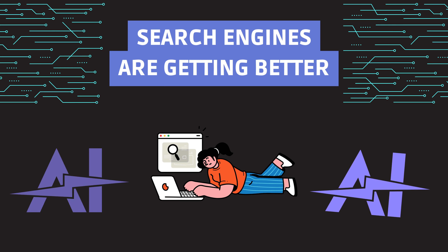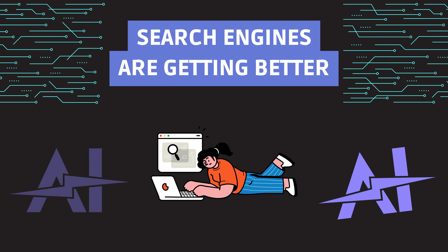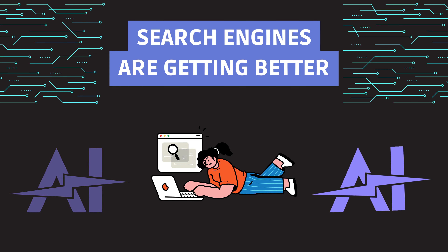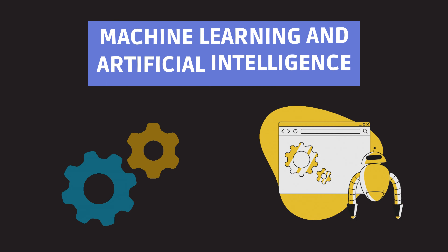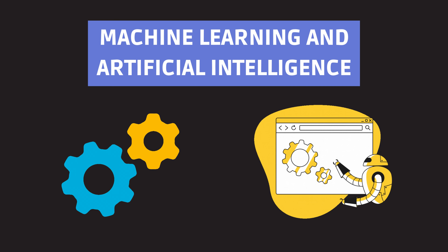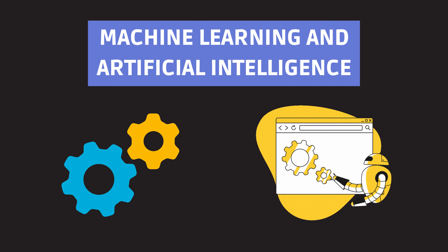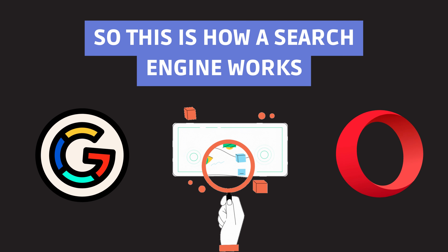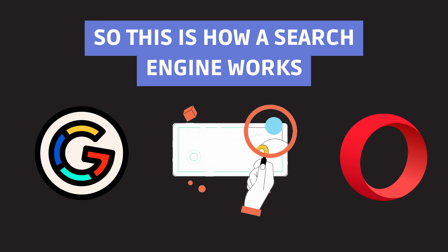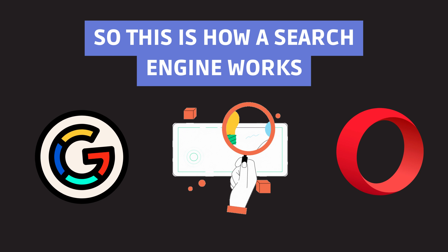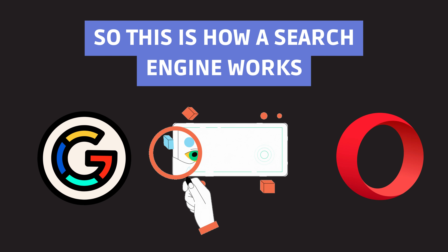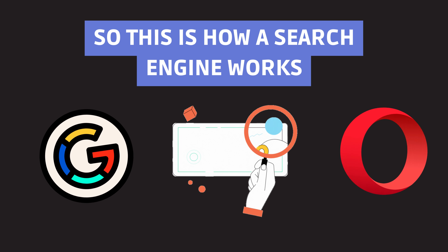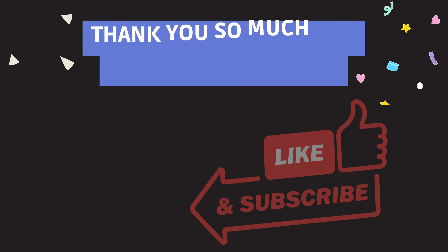But the fun does not stop here. Search engines are constantly evolving to provide even more accurate and helpful results. They use machine learning and artificial intelligence to refine their algorithms. That's a simplified look at how search engines work — behind those simple search bars, there's a world of complex algorithms working tirelessly to bring you the information you need.